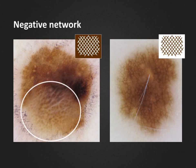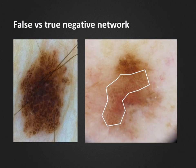This pattern may even remind us of a giraffe's fur. The negative network can be seen within the circle in the lesion to the left. One must not confuse the global pattern known as the cobblestone pattern with a negative network. In the case on the left, the clods of this congenital nevus are surrounded by whitish or pale lines just like in the negative network, but they cover the totality of the lesion. A true negative network, as seen in the case on the right, only covers part of the lesion — this one turned out to be a melanoma in situ.